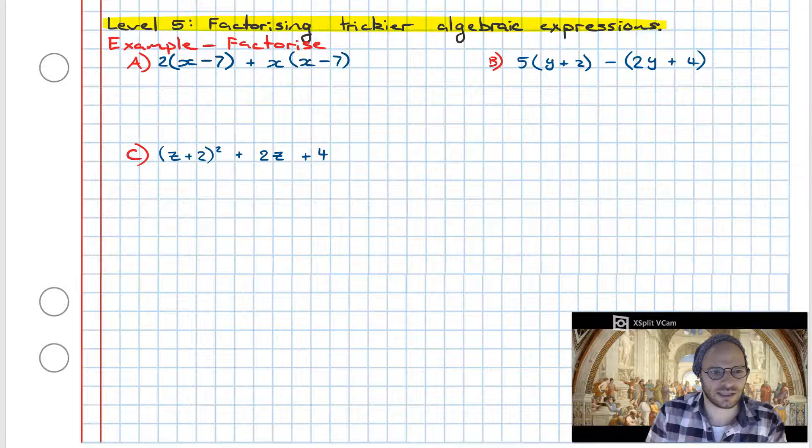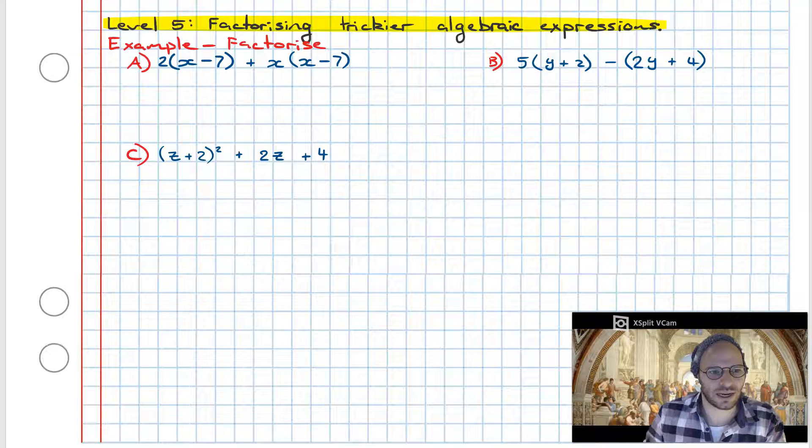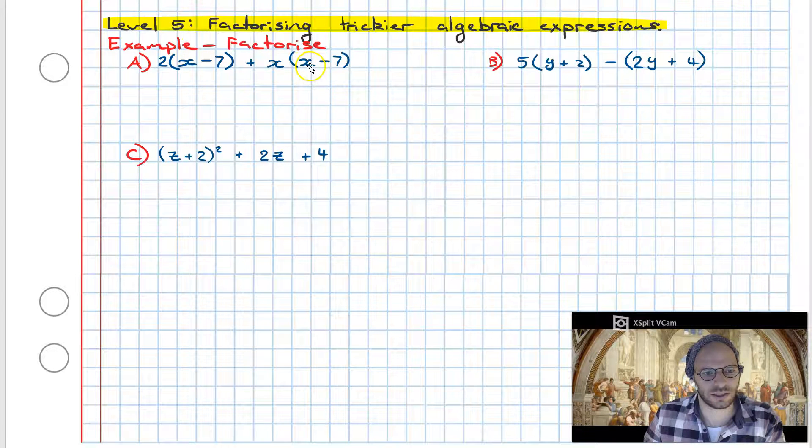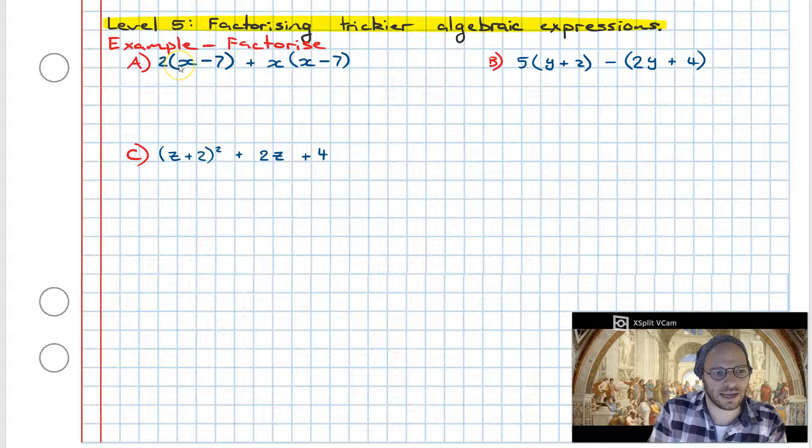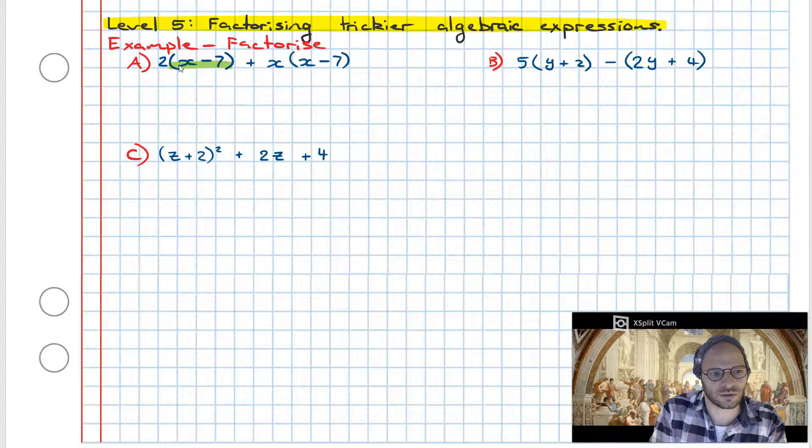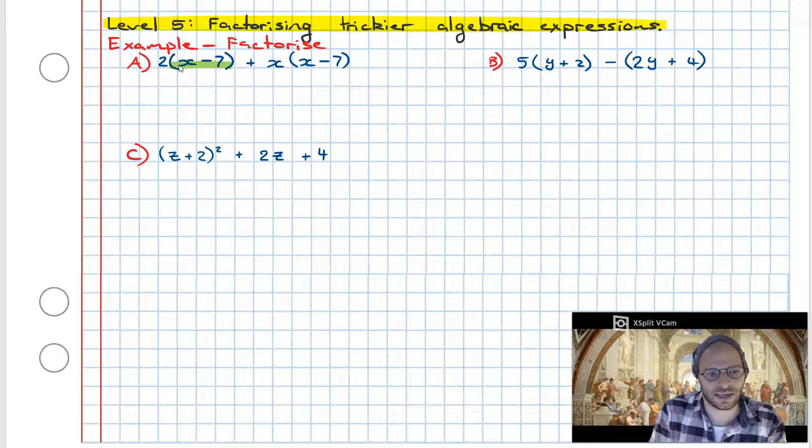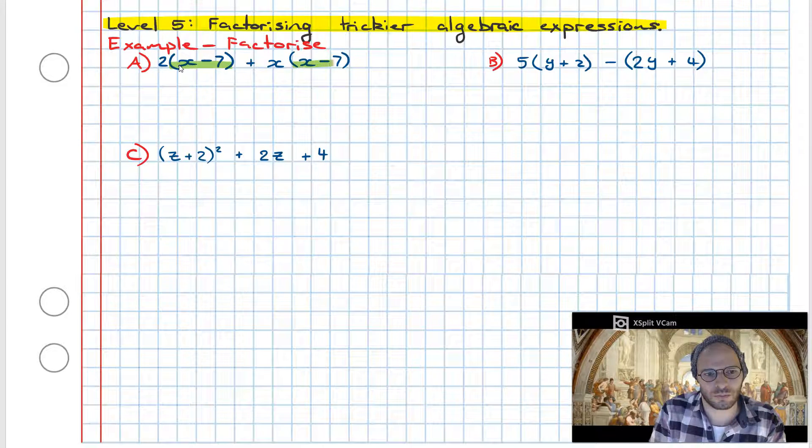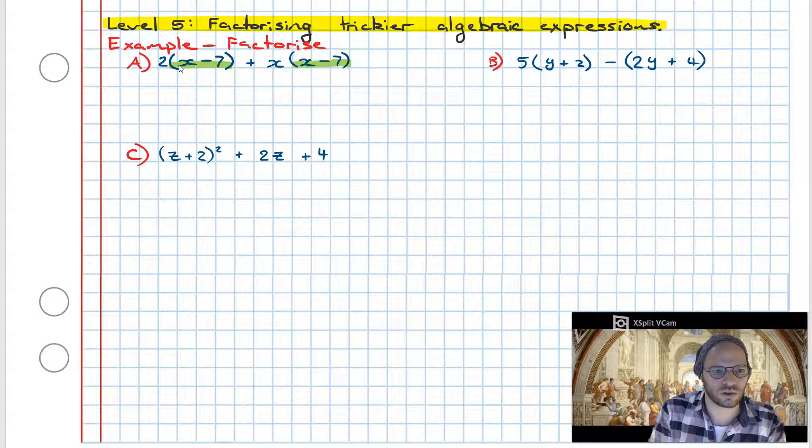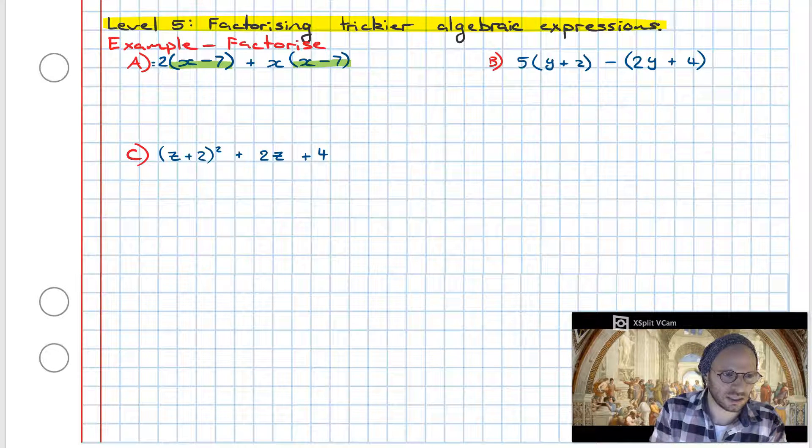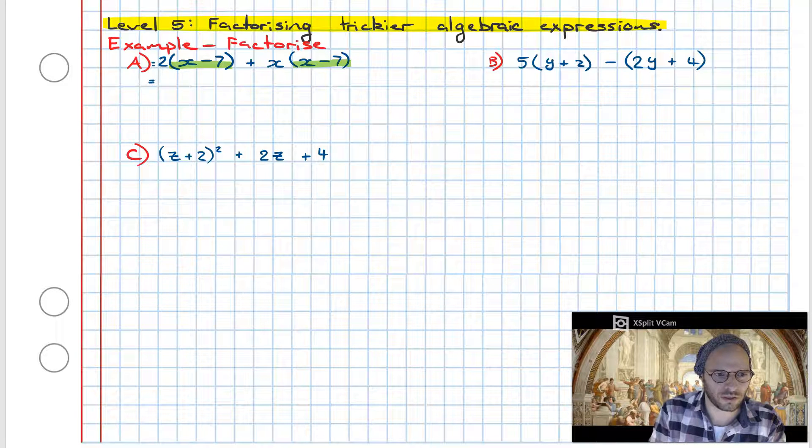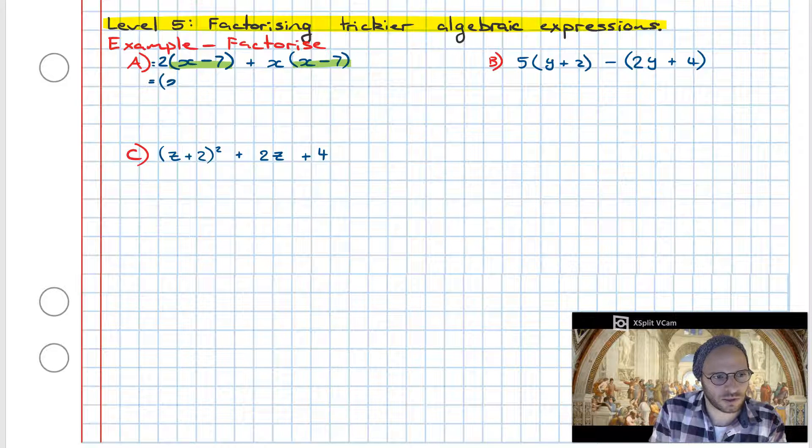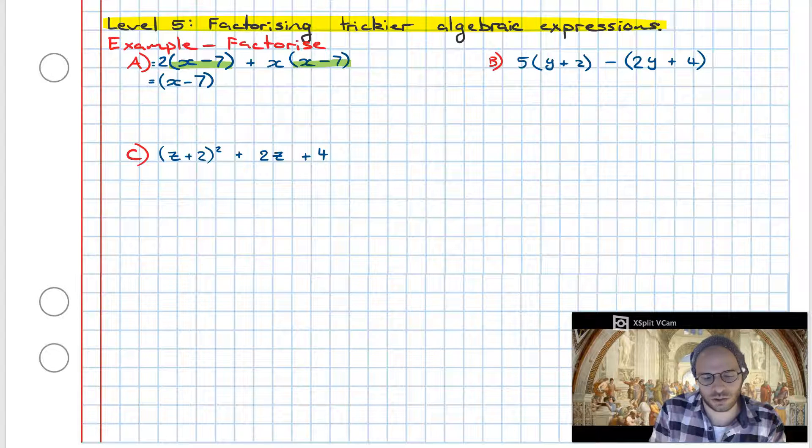The reason I say that is if we take a closer look at what we have in this expression, across both of the terms we have a 2 and an x minus 7 already in brackets. Then for the second term we have an x multiplied by an x minus 7 also already in brackets. Now if we have a look, they're both in common and therefore we can pull them out like so. The factorization process has already started.